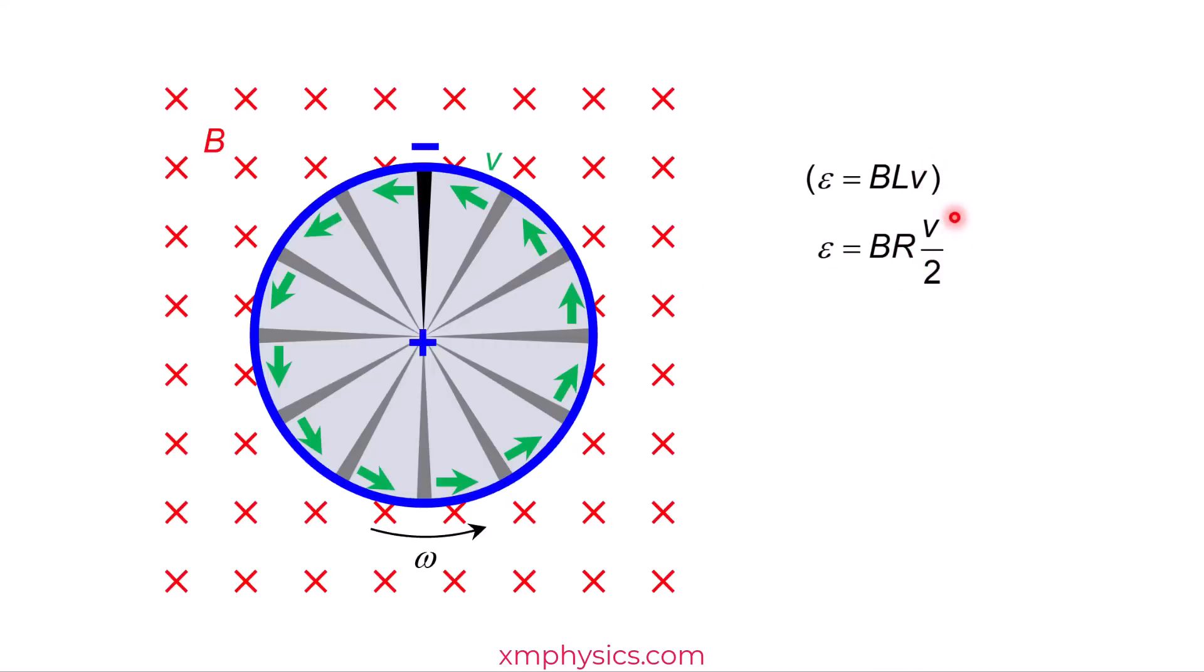For the V, I'm going to write V over 2. Do realize that this wire, it's not moving leftward actually. It's actually rotating. So this end of the wire is actually not moving. Whereas this end of the wire has a velocity of V.